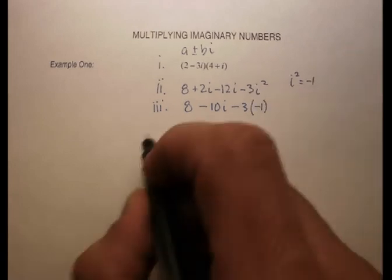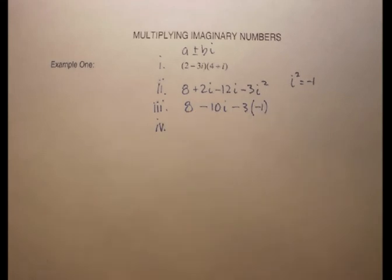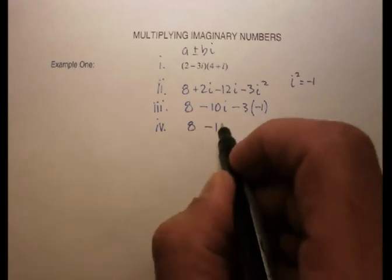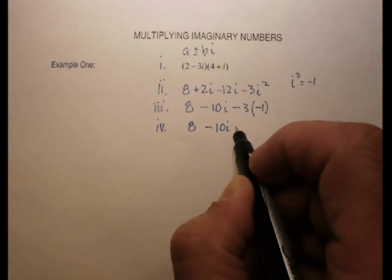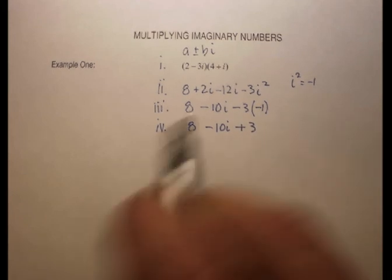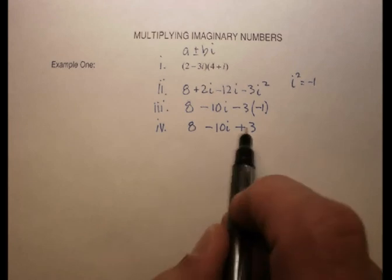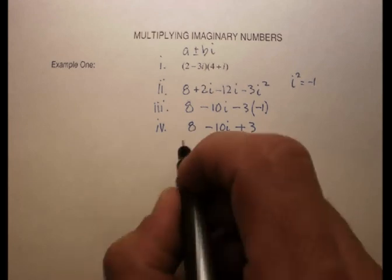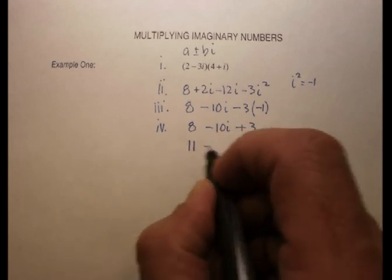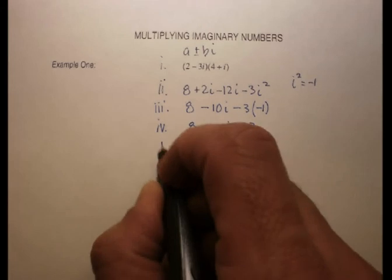That actually is pretty helpful because now I can actually gather a couple more terms. I'm going to get 8 minus 10I plus 3 because minus 3 times the minus 1 is a plus 3. And I'm going to be able to add those two guys together and come up with 11 minus 10I.